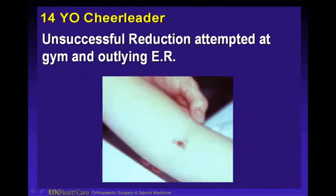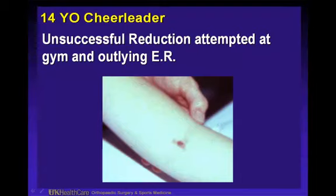This is a 14-year-old girl who had multiple attempted reductions of her elbow dislocation — by her father, her coach, and an outlying emergency room — with repeated pulling. The little red dot indicates vascular injury — she had a brachial artery thrombosis which required revascularization. If you have an elbow dislocation, it is better to get them to an ER facility that knows how to perform a proper reduction, rather than having untrained individuals repeatedly attempt it in outlying areas.